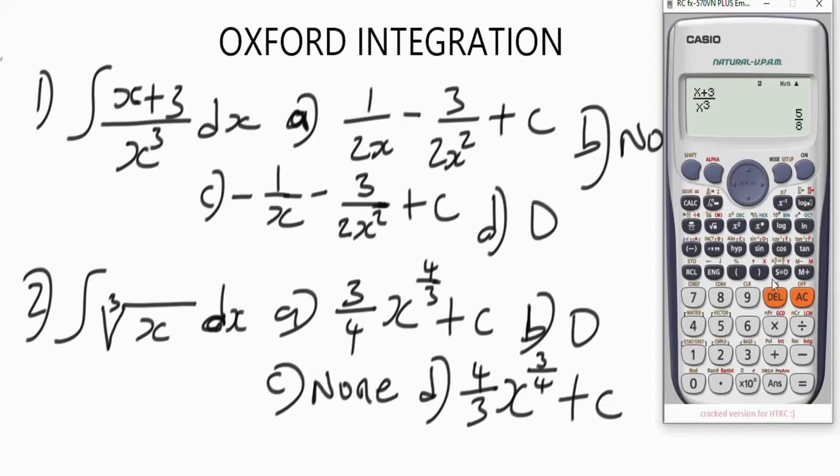Just press equal here. We have 5 over 8, which is 0.625. If you press SD, the value will be changed to decimal. Now I'm going to differentiate the options. Anyone that gives us 0.625 or 5 over 8 will be the answer.